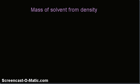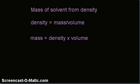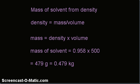Second step is to find the mass of solvent from the density. Density equals mass divided by volume, therefore mass equals density times volume. The mass of water (the solvent) is 479 grams, which converts to 0.479 kilograms.